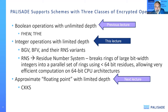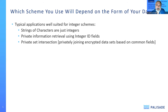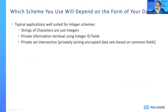Finally, there's approximate floating point with limited depth, and CKKS is the representative example — we'll discuss that in detail in the next lecture. Which scheme you use depends on the form of your data. Typical applications well-suited for integer schemes are strings of characters (since characters are just integers), private information retrieval using integer ID fields, and private set intersection — privately joining encrypted datasets based on a common field, which is often an integer ID field.